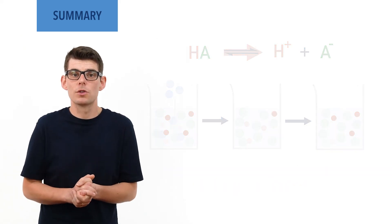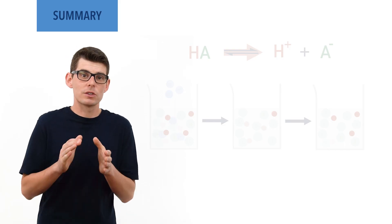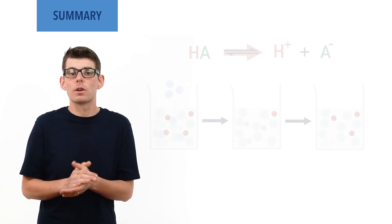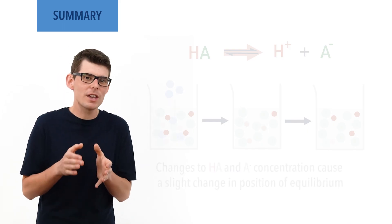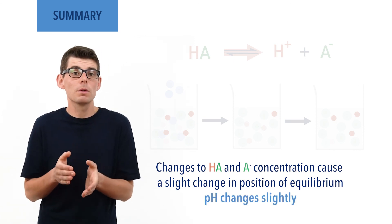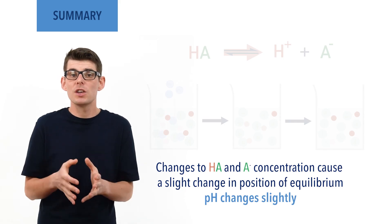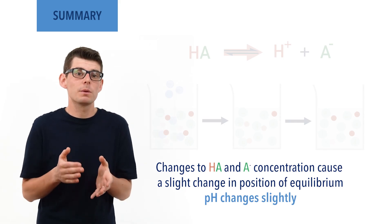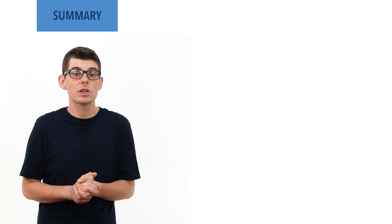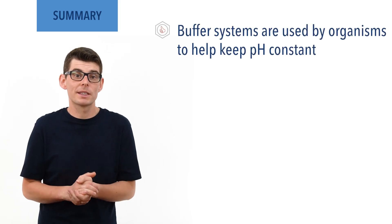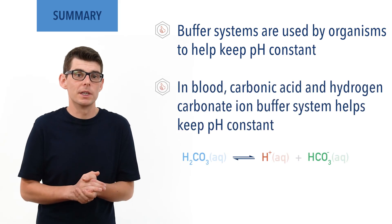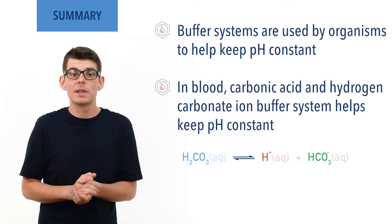Although changes to acid and conjugate base ion concentration have a smaller impact on the position of equilibrium compared to H⁺ ion concentration change, any change to their concentrations does still shift the position of equilibrium slightly, meaning a slight pH change does still occur when small amounts of acid or base are added — it's just much smaller than if there was no buffer system. Buffer solutions are important in biology to help keep pH at optimum levels for enzyme activity. In blood, a buffer solution formed between carbonic acid and hydrogen carbonate ions helps keep blood pH nearly constant.